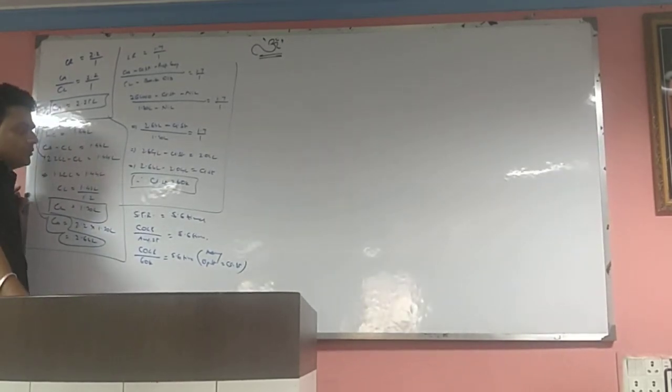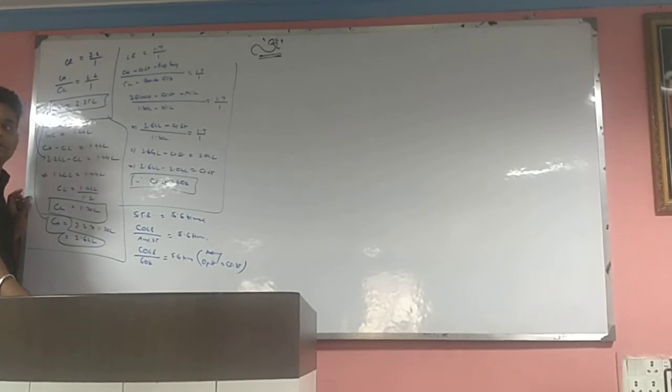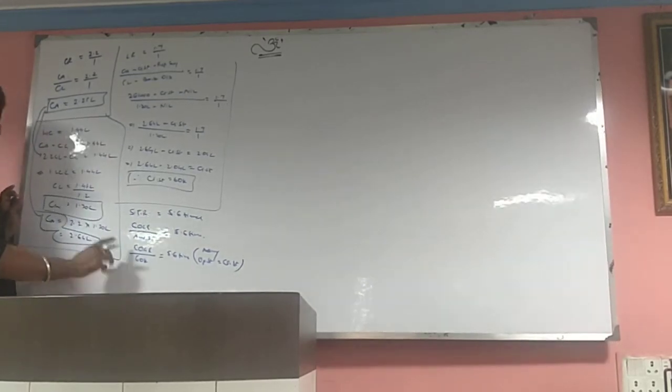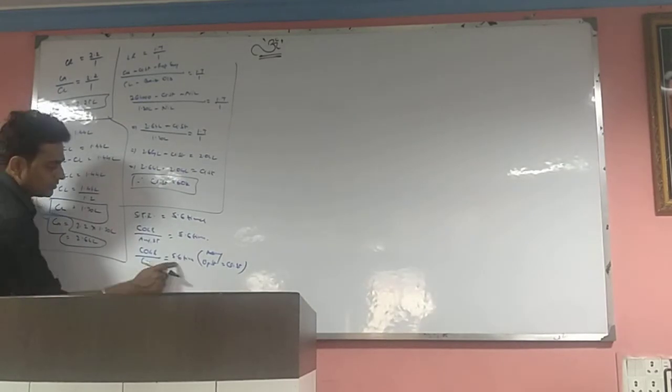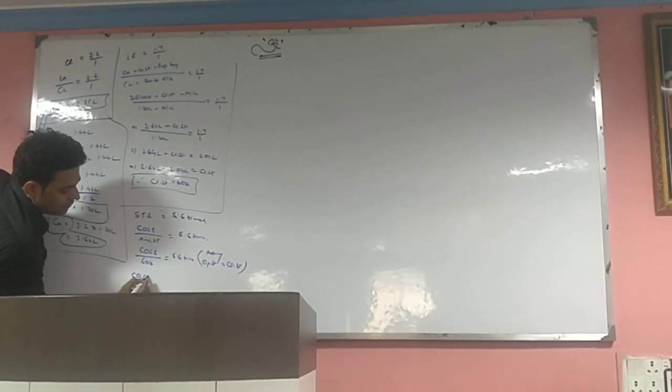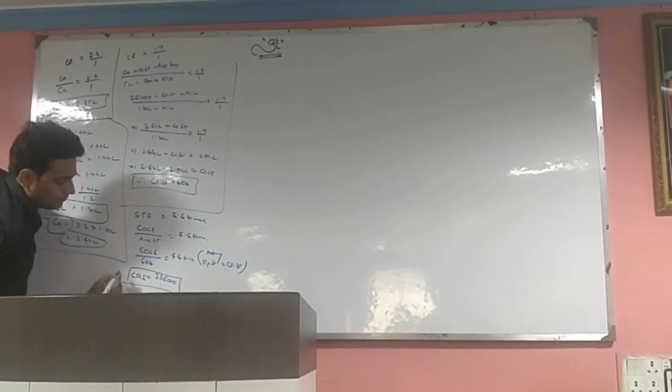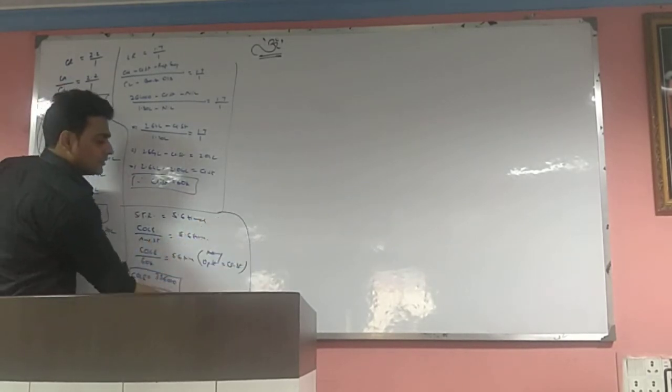When nothing is given, assume opening equals closing. If opening 60 and closing 60, average stock is 60 plus 60 divided by 2, which is 60. So we can directly use 60. 60 times 5.6, COGS equals 3,36,000. Now we can use this data. COGS goes into GP.